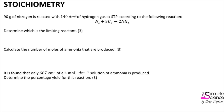90 grams of nitrogen is reacted with 140 cubic decimetres of hydrogen gas at STP according to the following reaction. The balanced equation is given here. Determine which is the limiting reactant.